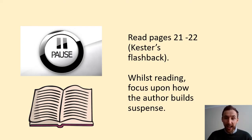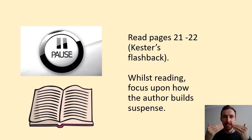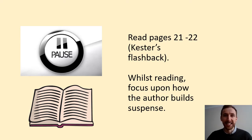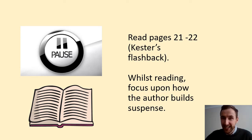I'm so impressed with the vocabulary you have developed an understanding of in this lesson. Let's quickly recap: suspense, foreboding, pathetic fallacy. We're really developing a wide array of vocabulary so that we will be able to express ourselves in our writing using the most sophisticated vocabulary. Well done to your commitment to developing your vocabulary. Now, you will need pages 21 and 22 of The Last Wild in front of you. You're going to read that part of the text aloud. Whilst you're reading, focus upon how the author builds suspense, how the author creates a sense of foreboding, and how pathetic fallacy contributes to that. Then we're going to come back together to share our ideas. Off you go.